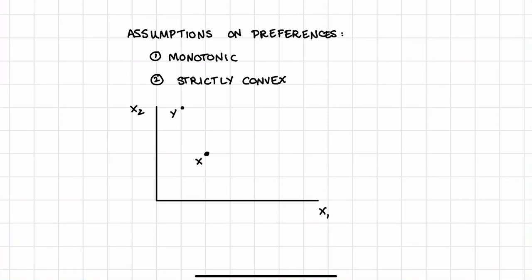In this chapter, we're going to make two assumptions about our preferences, just for simplicity. It's going to be that preferences are monotonic and that preferences are strictly convex.